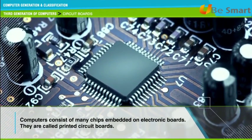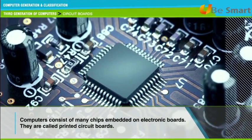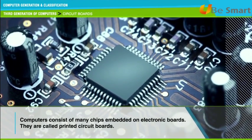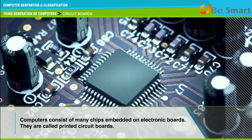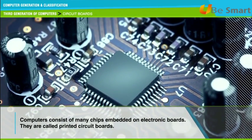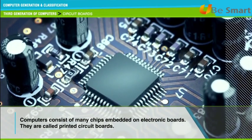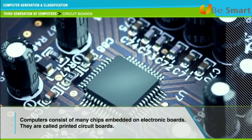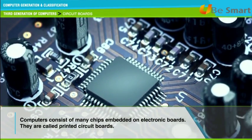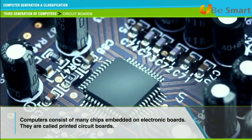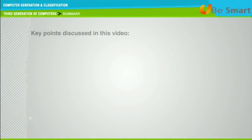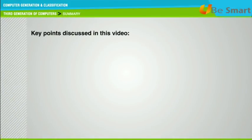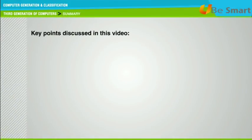There are different types of chips. For example, CPU chips — also called microprocessors — contain an entire processing unit, whereas memory chips contain blank memory.